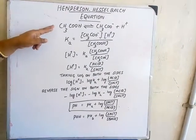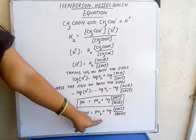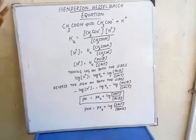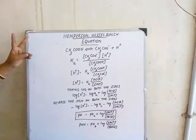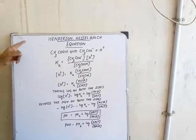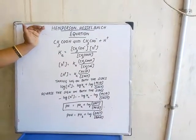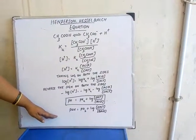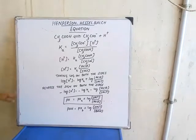Likewise, if you do it for weak base, we get: pOH = pKb + log(salt/base). So in today's class, what we discussed: what is meant by buffer and what are the types of buffer solution, what is common ion effect, and finally, by using the common ion effect, we derived the Henderson-Hasselbalch equation for weak acid as well as weak base. With this, we complete today's class. We will discuss the rest of the topics in the next class.